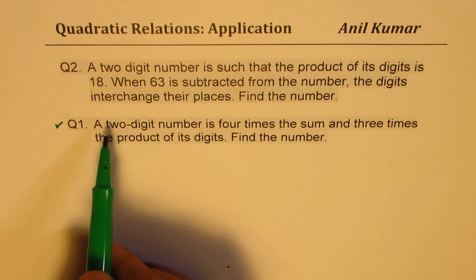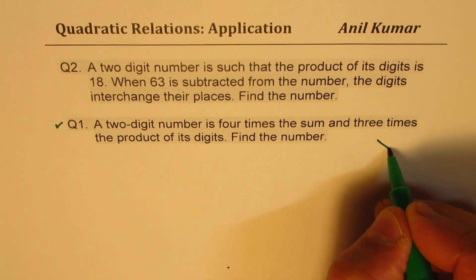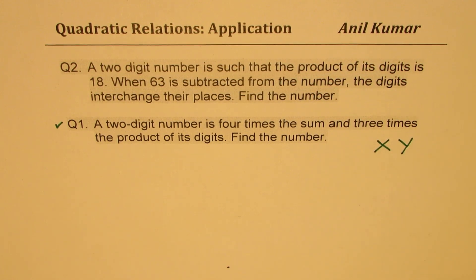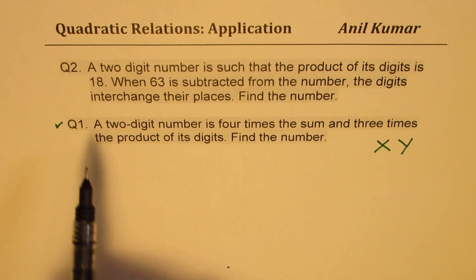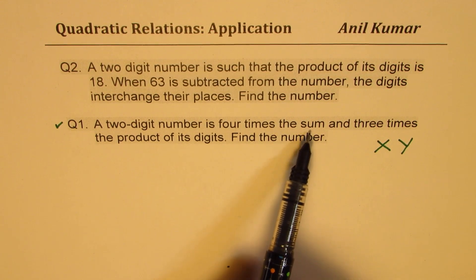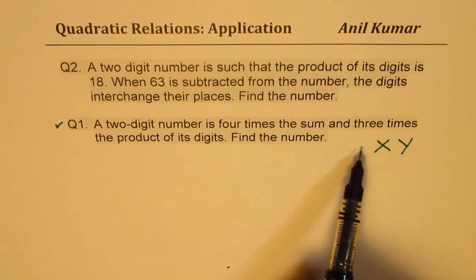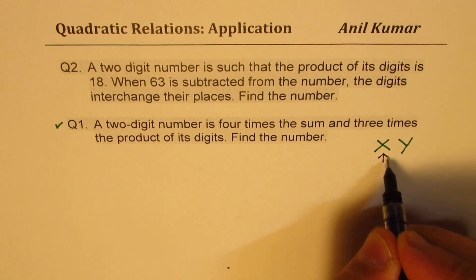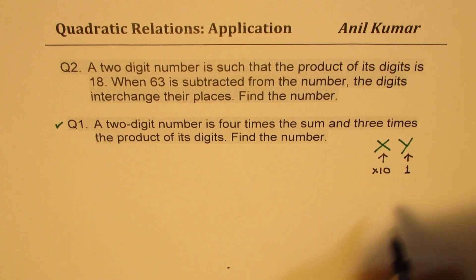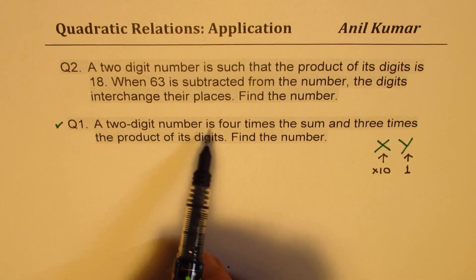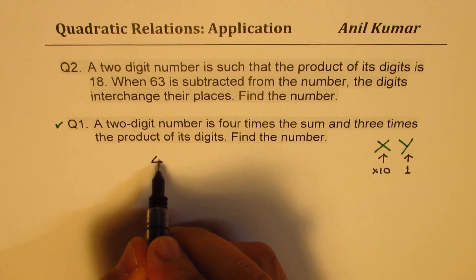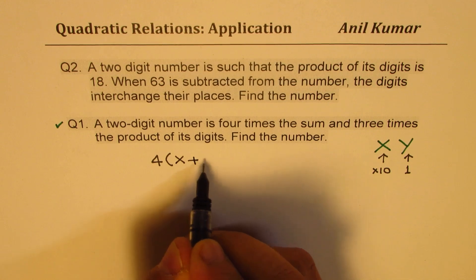Find the number. When I say two-digit number, we let the ten's place be x and the one's place be y. So that becomes the two-digit number. The value of this number is x multiplied by ten — since x is in the ten's place — and y multiplied by one. So the number equals 10x plus y. The problem says the two-digit number is four times the sum, so four times the sum means 4 times (x plus y).